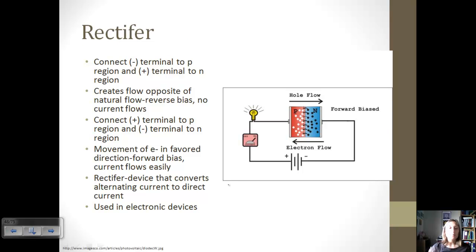We also have what's called a rectifier, and this basically converts alternating current to direct current, and we can use P-N junctions to create these. So we can connect terminals in two different ways. If we connect the negative terminal to the P-region and the positive terminal to the N-region, then the flow of electrons is going to be opposite of natural flow, so we call that reverse bias, and no current is going to flow. So if we switch the way that things are connected, connect positive to the P-region, so here's our positive terminal, and then connect the negative terminal to the N-region, that's called a forward bias, and current is going to flow really easily. And so this is what a rectifier is. It's converting that current. It's used in a lot of electronic devices. So if the current goes, is flowing, then basically we're going to be able to light up the light bulb. So electron flow is this direction, and hole flow is this direction.